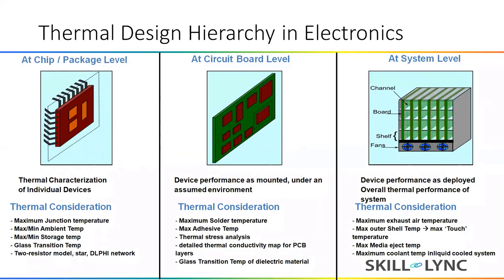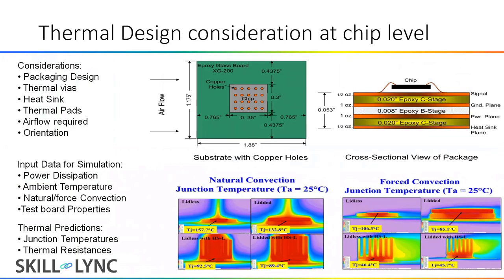In a forced convection system, we check the exhaust temperature. We also check the outer shell temperature — for example, if you overuse a mobile phone, you'll feel it becoming hot. So when the processing power is at its limit, we calculate the maximum outer shell temperature and the maximum touch temperature. For CD or DVD players, we analyze the maximum media eject temperature. In liquid-cooled systems, we also calculate the maximum coolant temperature.